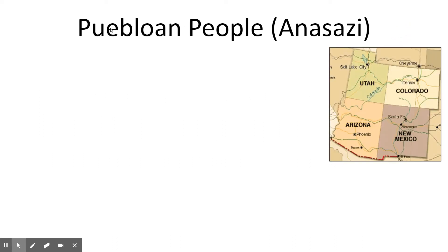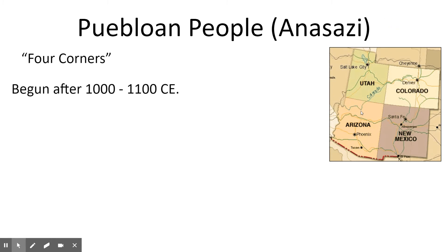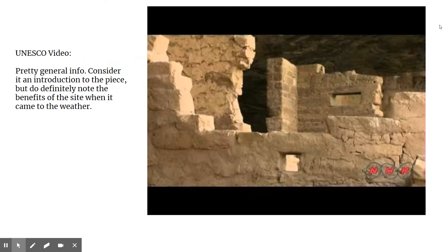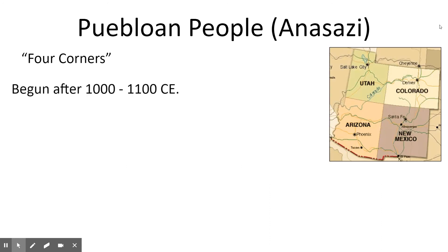The Anasazi — the ancient Puebloan people — occupied what is identified as the Four Corners, now known as the areas of Utah, Colorado, New Mexico, and Arizona. The area began to be really occupied around 1100 CE, maybe a little later. The College Board starts at 400 CE, but the Cliff Palace constructions on the sides of the mountain are what we're really focused on.